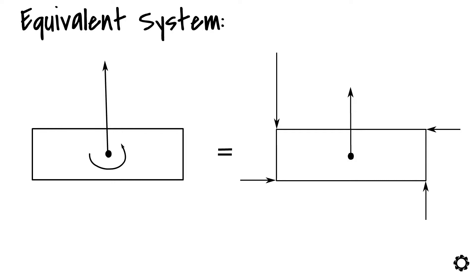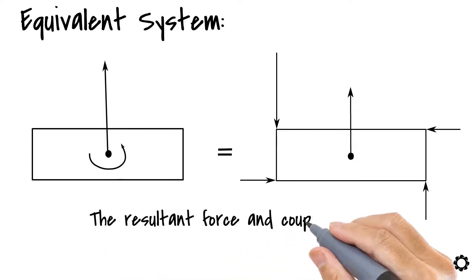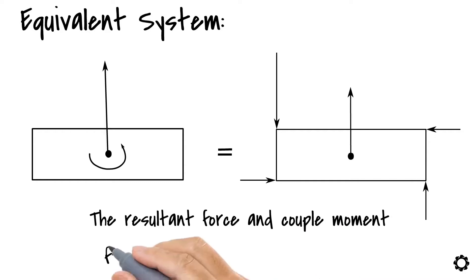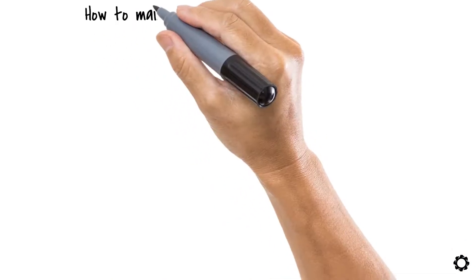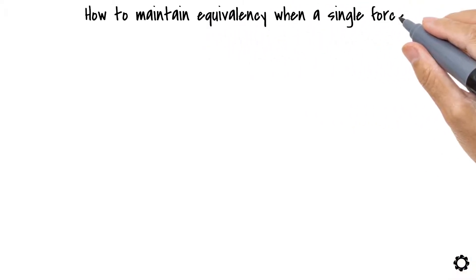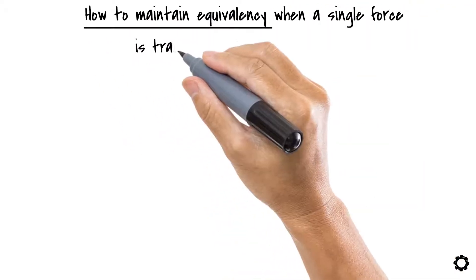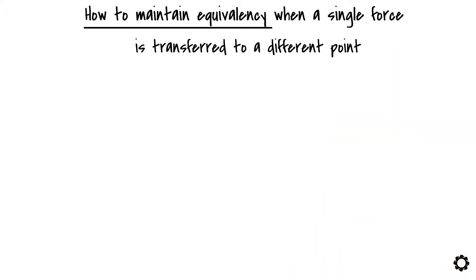Instead of using a system of different forces and couple moments, we can use the resultant force and couple moment which together form the equivalent loading system on a body. Let us now discuss how to maintain equivalency when a single force which is applied to a specific point on the body is transferred to a different point. There are two ways in which we can move the force to locate it at a different point on the body.